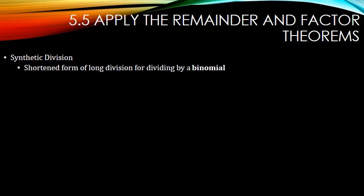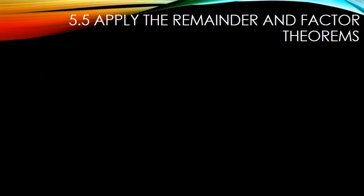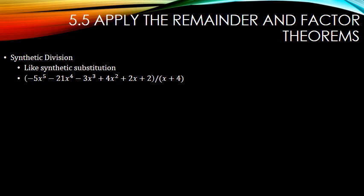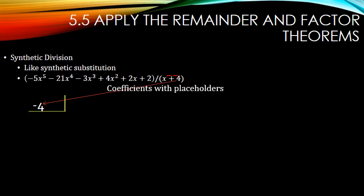Synthetic division is a shortened form of long division for dividing by a binomial. It only works when dividing by x minus r. Here's our long division problem — we have x plus 4, which is the same as x minus negative 4. So we take negative 4 and put it in the box. Then list all the coefficients with placeholders: negative 5, negative 21, negative 3, 4, 2, and 2. If we're missing any powers of x we put a 0 in for them.